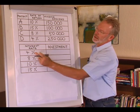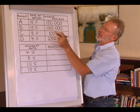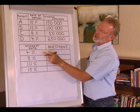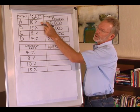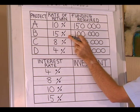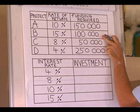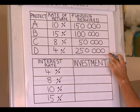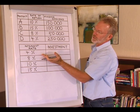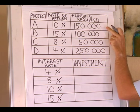If we complete the table, we'll see that at an interest rate of 4%, all of these projects are viable. For example, project A's expected rate of return is 10%, and it costs you only 4% to borrow the funds, so this project is viable. Project B's rate of return is 15%, costs us 4%, so project B is also viable. We can do the same with projects C and D — all projects are viable because the expected rate of return is more than the interest rate, the cost of borrowing. So at an interest rate of 4%, the expected investment is $550,000.